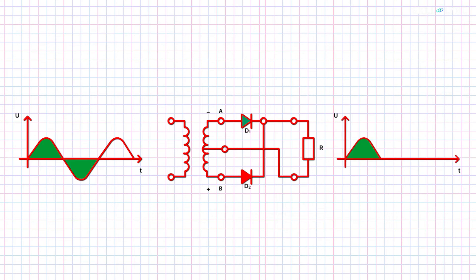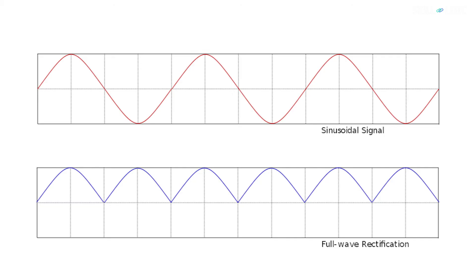During the second half of the AC input, point B is at a higher potential than point A. Here, diode 1 acts as an open switch and thus current flows from diode 2. Thus, both the halves of the AC current are passed through the diodes respectively. Thus, we get direct current as the output.